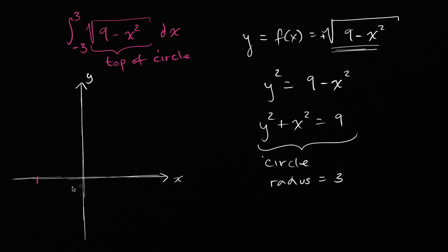This is going to have a radius of 3, centered at the origin. So this is going to be negative 3. This is going to be 3. This is going to be 3 right over here. So this graph, this function is going to look like this.